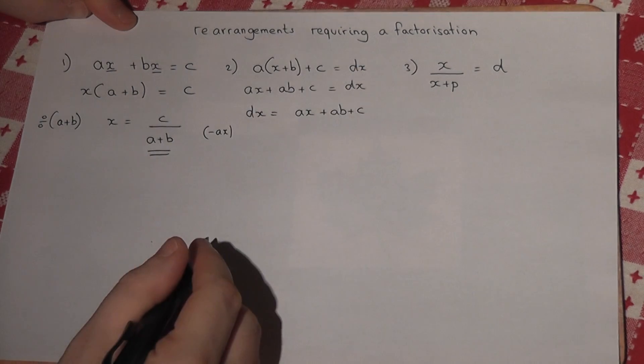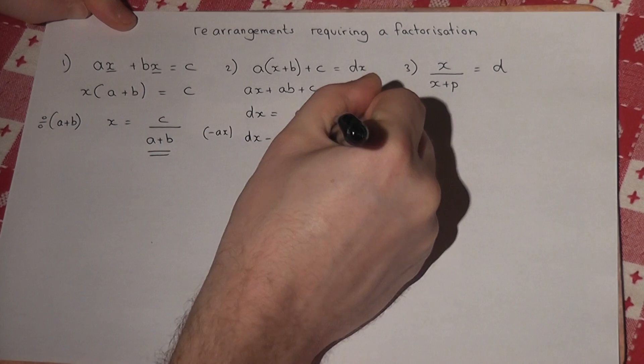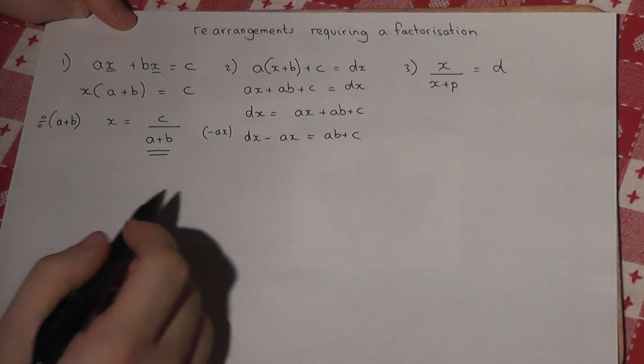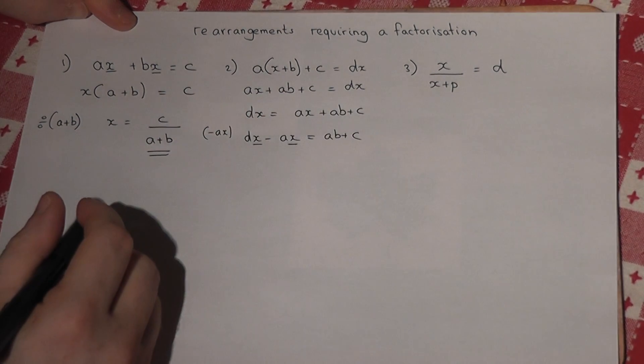I'm left with dx - ax = ab + c, so the x terms are now on the left-hand side. I can now factorize because there's a factor of x on the left-hand side.